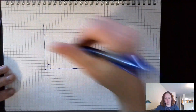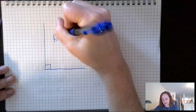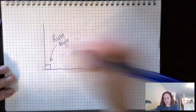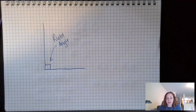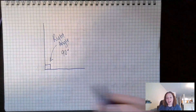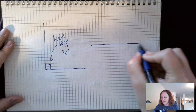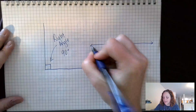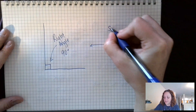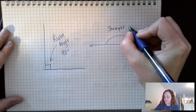The first is a right angle. We should know that by now. That little square symbol stands for right angle, and we know that a right angle is always exactly 90 degrees. We have to know that.